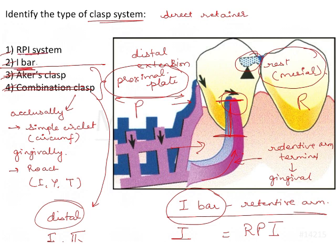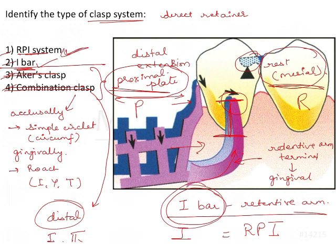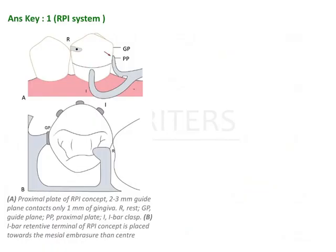That leaves us with RPI system and I-bar. I-bar alone is a valid option, but here the entire system — including the proximal plate and the mesial rest — is also shown. There is a distal plate and a mesial rest along with the I-bar, so the correct answer is RPI system, not I-bar alone. Looking more closely, PP is the proximal plate and GP is the guide plane; a flat guide plane is created so the proximal plate can seat properly.